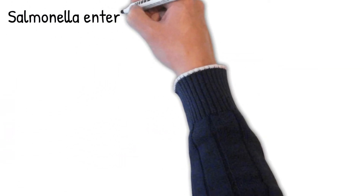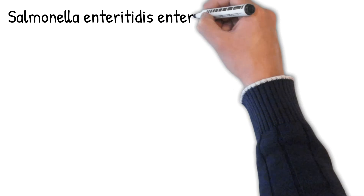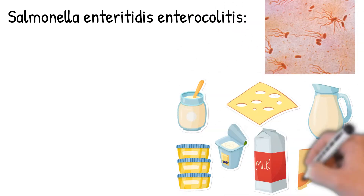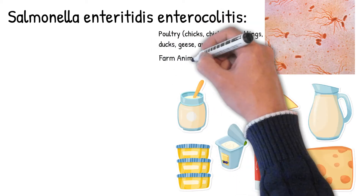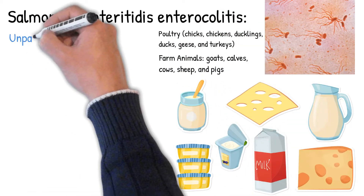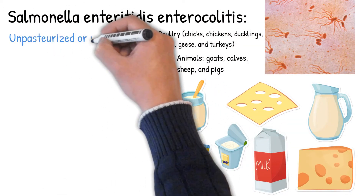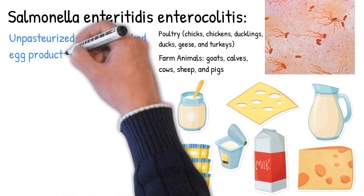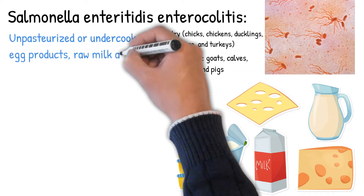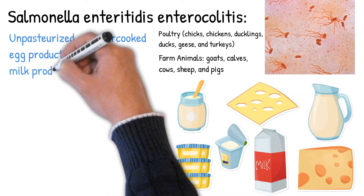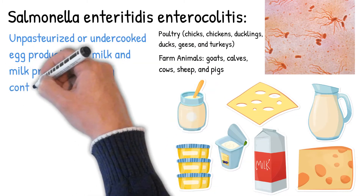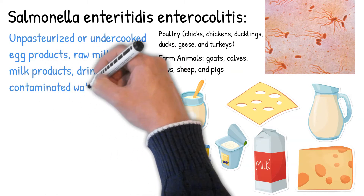Salmonella enteritidis enterocolitis is caused by bacteria of the Salmonella type and is the second most common foodborne illness in the United States. It is caused by eating unpasteurized or undercooked egg products, raw milk and milk products, drinking contaminated water, or improper washing of hands after handling animal reservoirs. Symptoms are diarrhea, fever, abdominal cramps, and vomiting, occurring between 12 and 36 hours after exposure and lasting from 2 to 7 days.